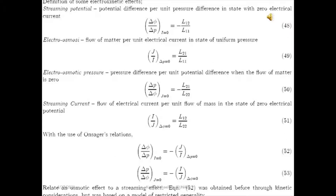Now let's look at some specific cases, called electrokinetic effects. First, the streaming potential: this is the potential difference for the unit pressure difference in the state of zero electrical current. In equation 46, we put I equal to zero, and we find relation 48 — the difference in the electrical potential between the two systems over the difference in pressure is just equal to minus L₁₂ over L₁₁, L₁₁ being the proper phenomenological coefficient. This is the case when there is no flow of charge between the two phases.